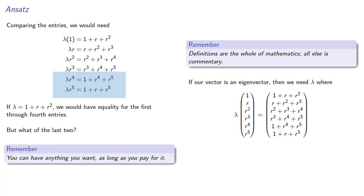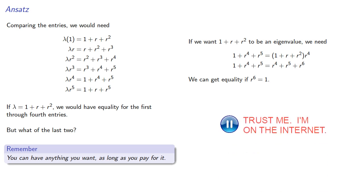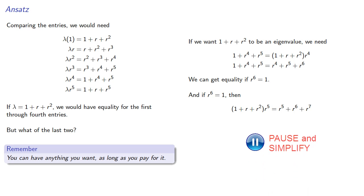Remember, you can have anything you want, as long as you pay for it. If we want 1 plus r plus r squared to be an eigenvalue, then for this entry, we need 1 plus r to the fourth plus r to the fifth to be 1 plus r plus r squared times r to the fourth. We can expand, and notice that we can get an equality if r to the sixth is equal to 1. And if r to the sixth is equal to 1, then our eigenvalue times r to the fifth gives us, which we can simplify, which also gives us the sixth entry of our product.